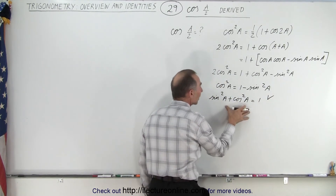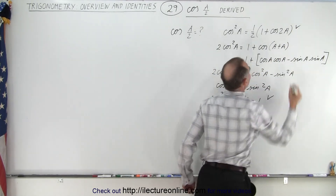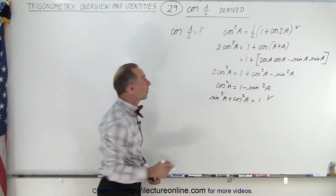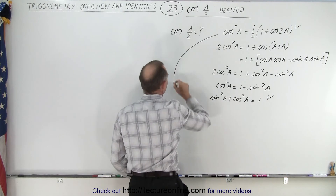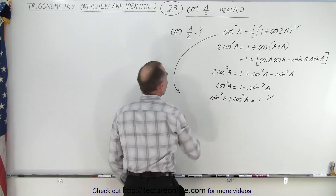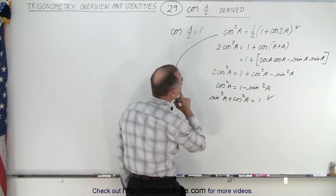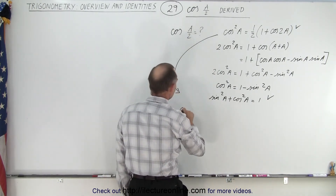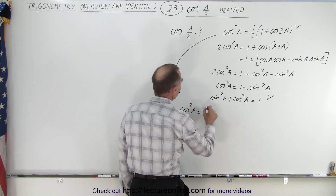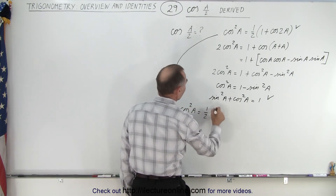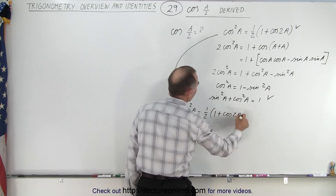Since that is correct, we know that this must be correct as well. So now starting with this expression, we can say that the cosine square of A is equal to one half times one plus the cosine of 2A.